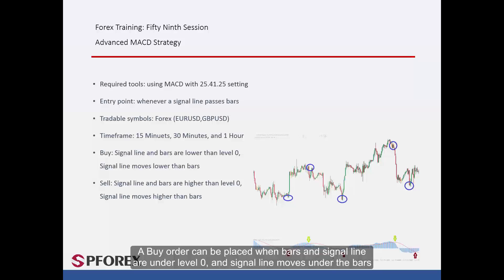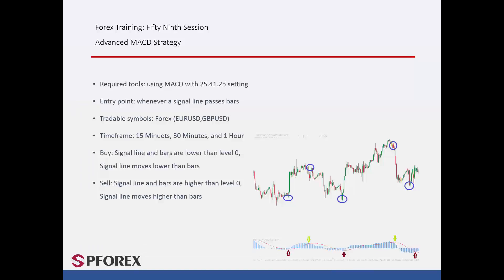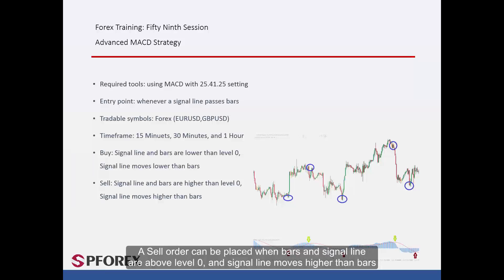A buy order can be placed when bars and signal lines are under level 0, and the signal line moves under the bars. A sell order can be placed when bars and signal line are above level 0, and the signal line moves higher than the bars.